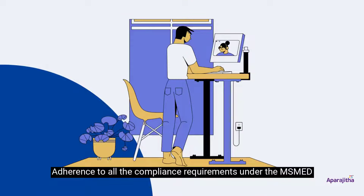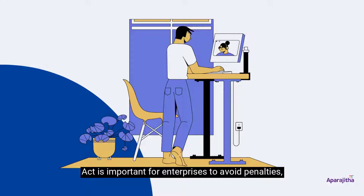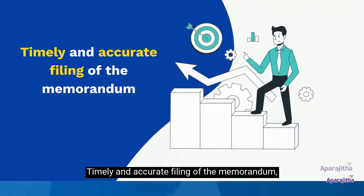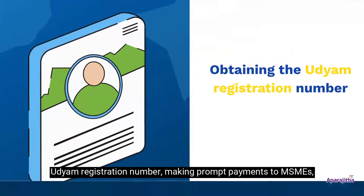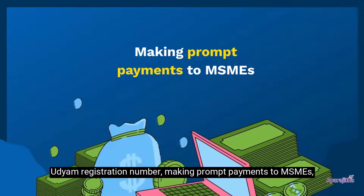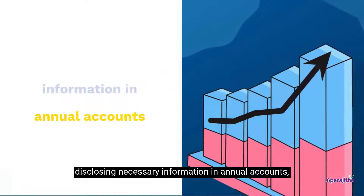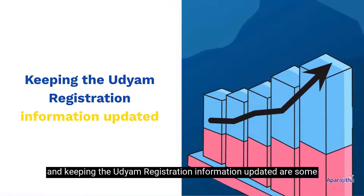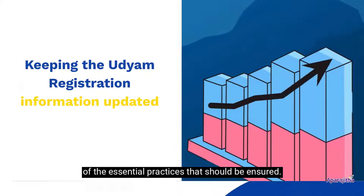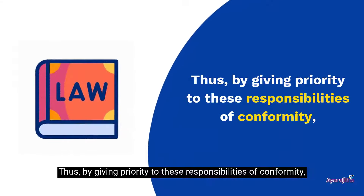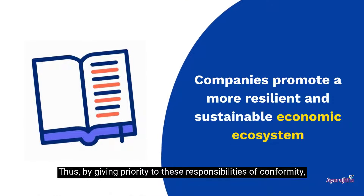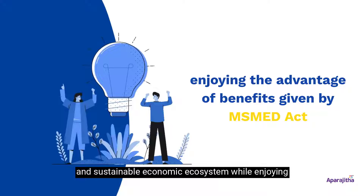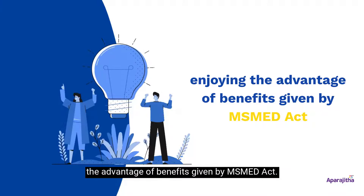Adherence to all compliance requirements under the MSMED Act is important for enterprises to avoid penalties. Timely and accurate filing of the memorandum, obtaining the Udyam Registration Number, making prompt payments to MSMEs, disclosing necessary information in annual accounts, and keeping the Udyam Registration information updated are some of the essential practices that should be ensured. By giving priority to these compliance responsibilities, companies promote a more resilient and sustainable economic ecosystem while enjoying the benefits provided by the MSMED Act.